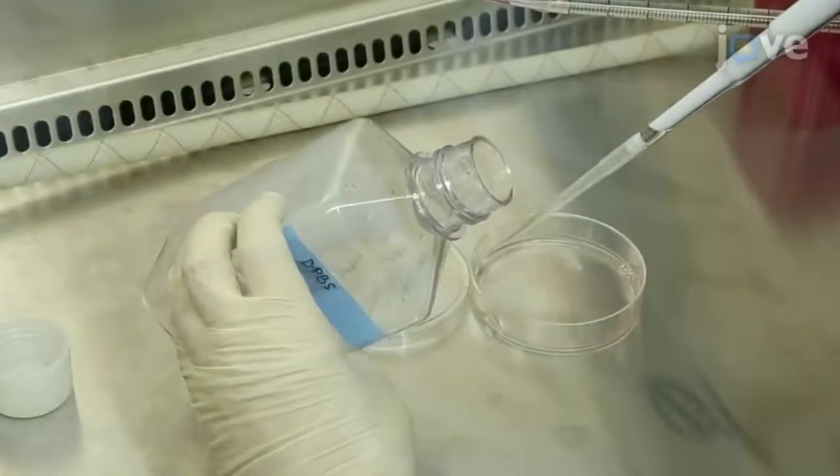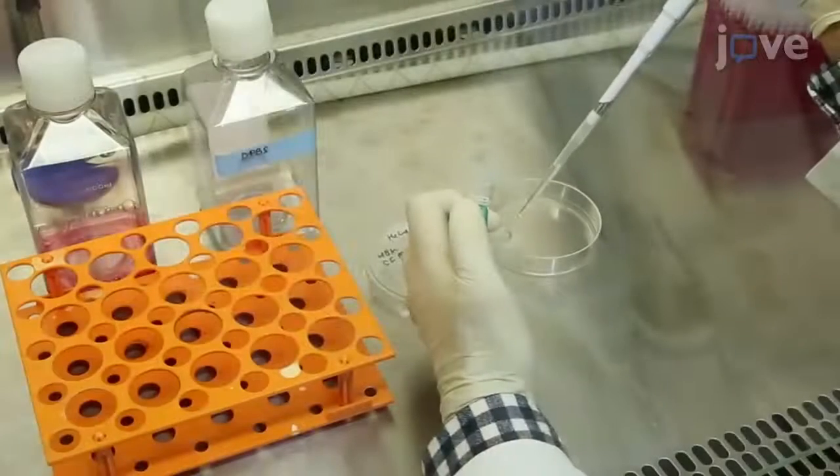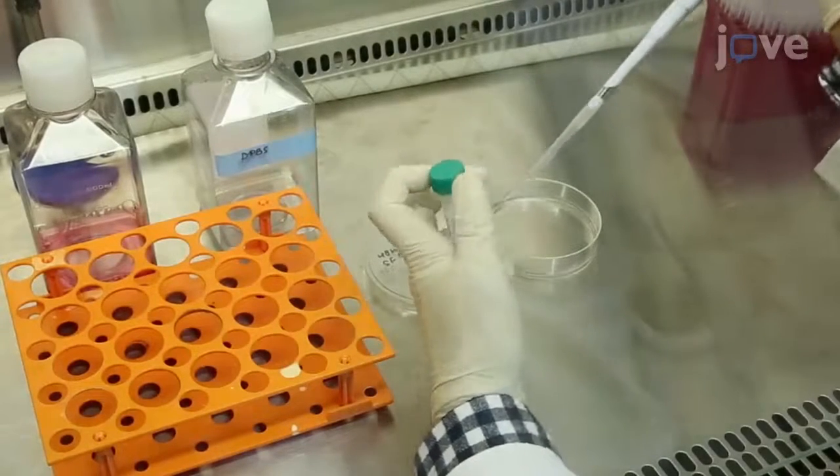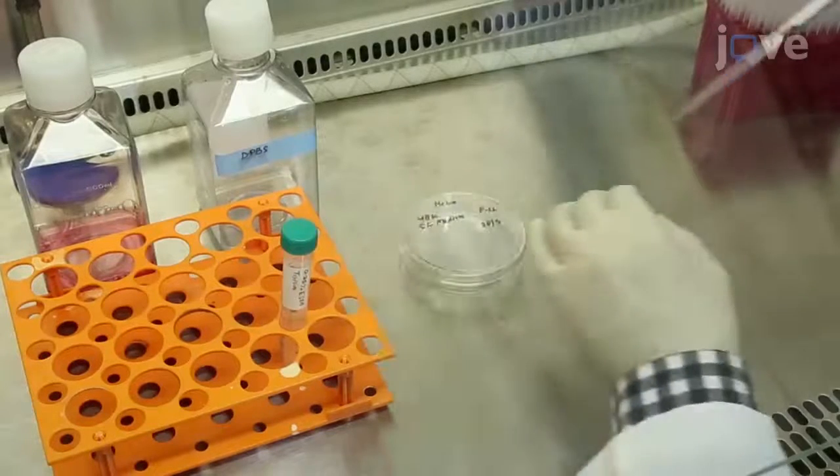After 48 hours, wash the cells with 2 mL of PBS, followed by incubation in 2 mL of 0.25% EDTA plus trypsin for 2 to 3 minutes at 37 degrees Celsius and 5% carbon dioxide.